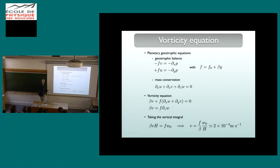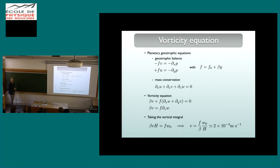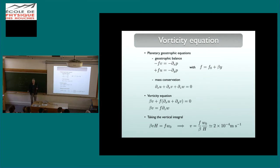This is essentially Sverdrup's argument for the wind-driven circulation, where divergence is generated by winds. Here Stommel uses the same argument for the deep ocean. Integrating vertically from the ocean bottom to the base of the thermocline at one kilometer depth — assuming a flat bottom where w = 0 — the result is: βV = f·w₀, where V is the vertically integrated meridional transport and w₀ is the uniform upwelling at the top. In the northern hemisphere where f > 0 and w₀ > 0, this implies poleward flow everywhere in the interior.